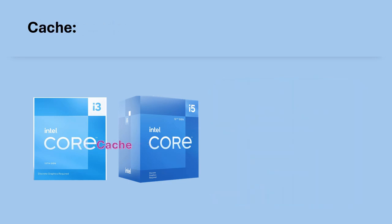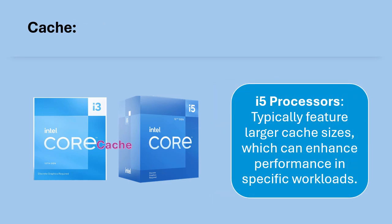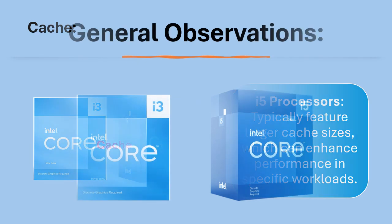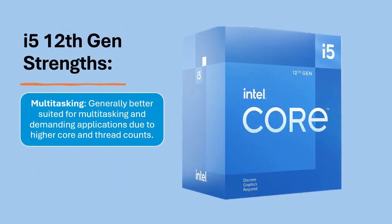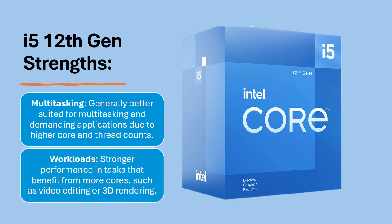Cache: i5 processors typically feature larger cache sizes, which can enhance performance in specific workloads. General Observations — i5-12th Gen Strengths: Generally better suited for multitasking and demanding applications due to higher core and thread counts, with stronger performance in tasks that benefit from more cores, such as video editing or 3D rendering.